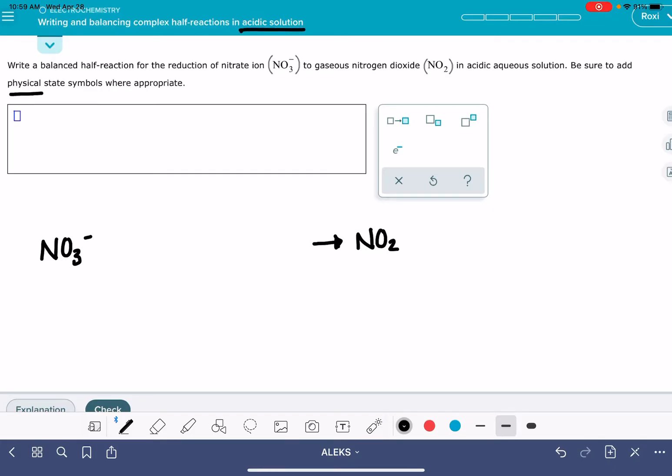It's telling us be sure to add physical state symbols where appropriate. So first of all, we do want to note that it tells us NO2 is gaseous, so we want to put a G here because it's a gas. If we have water, or when we have water, water is always going to be in the liquid phase in these reactions. And anything else, just assume that it is aqueous.